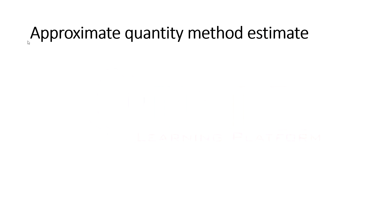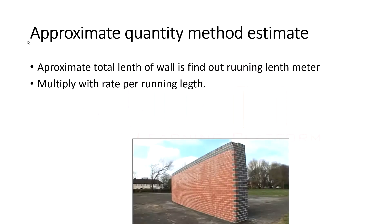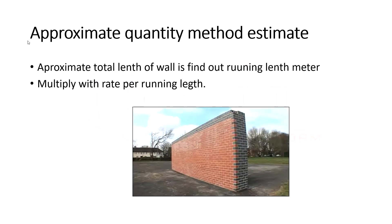In the approximate quantity method, the approximate total length of the wall is found in running meters, and the total length is multiplied by the rate per running meter of wall, giving a fairly accurate cost. For this method, a plan or line plan of the structure must be available. The running length of each wall is calculated and all walls of the building are included.